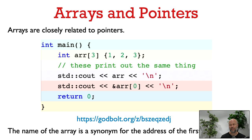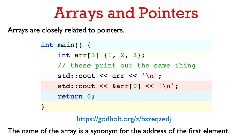Now let's talk about the relationship between arrays and pointers. Arrays have a strong relationship with pointers — basically any operation that we can do by array subscripting, we can also do via pointers. In fact, the name of the array itself is just a synonym for the address of the first element. So if we print out arr and also print out the address of the first element, these are going to print out the same thing.